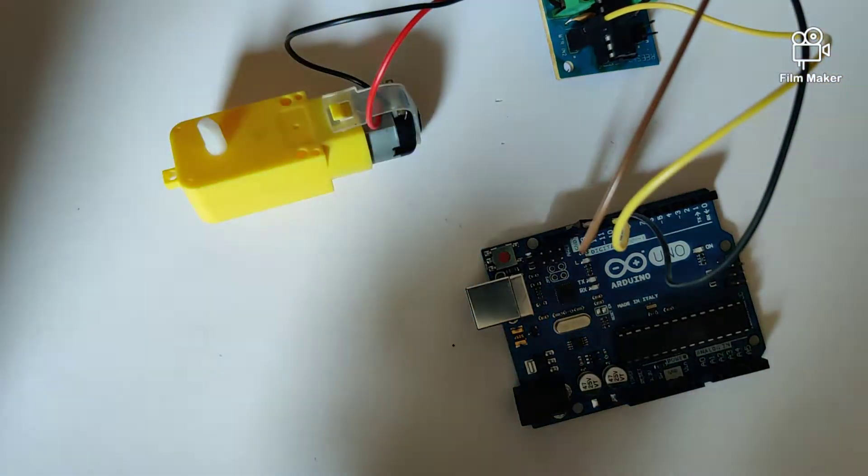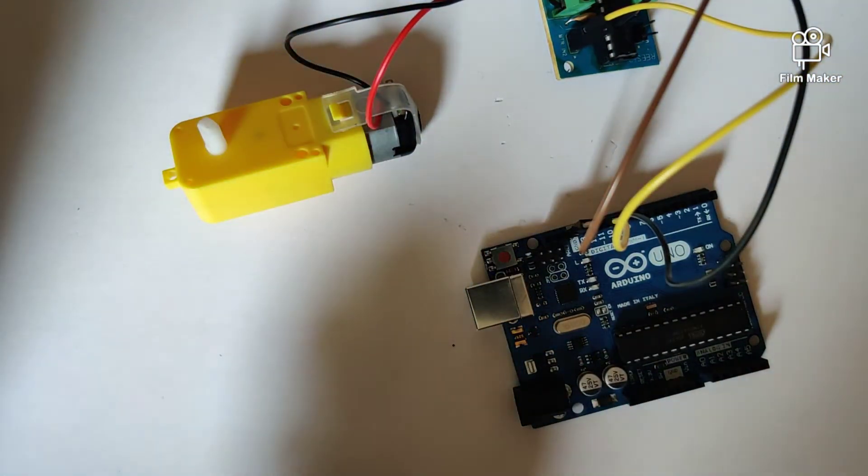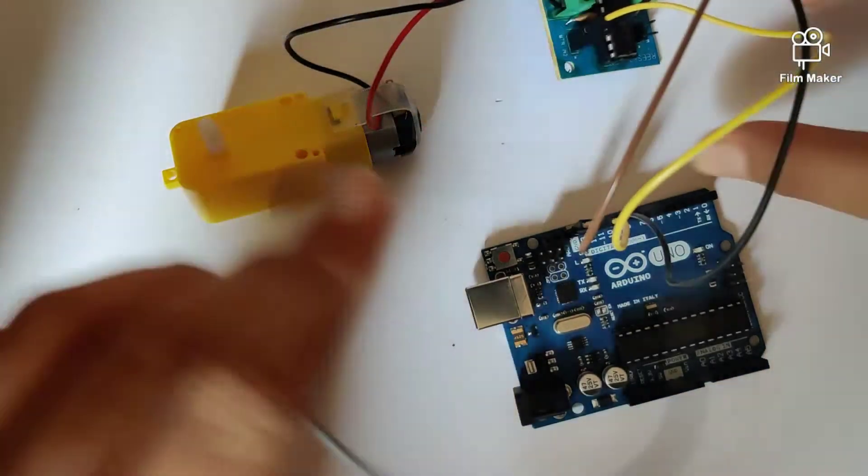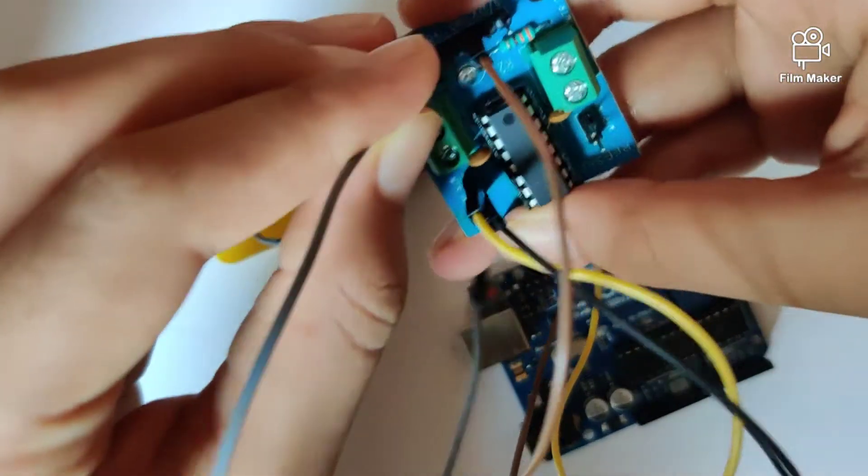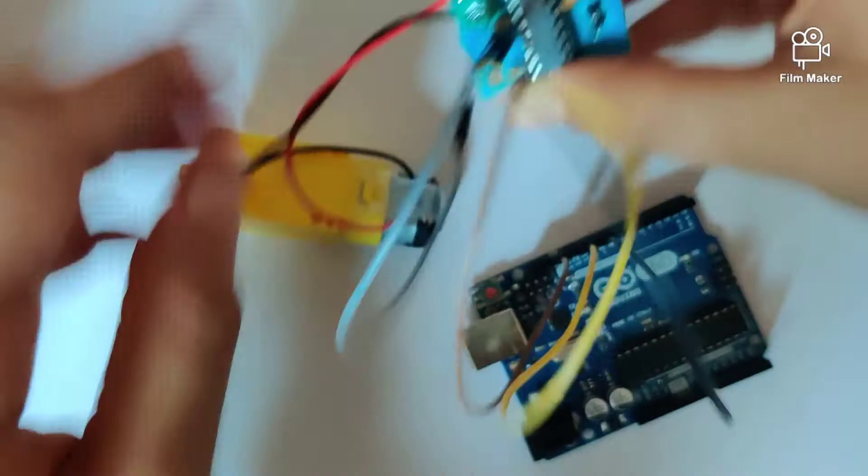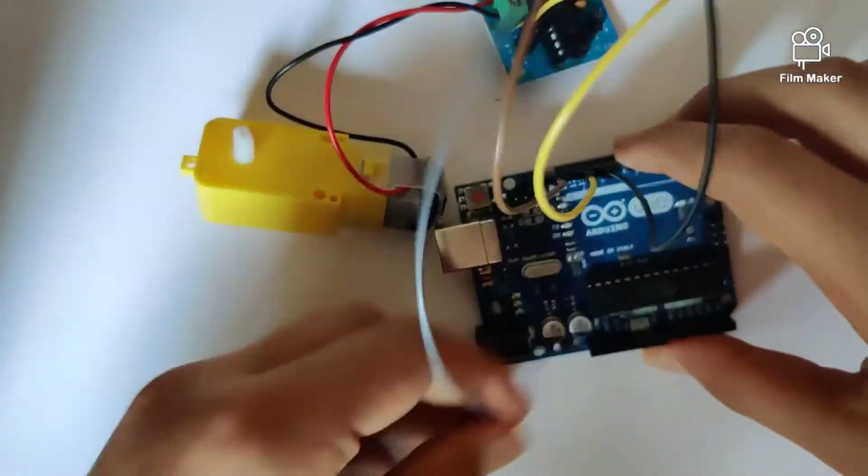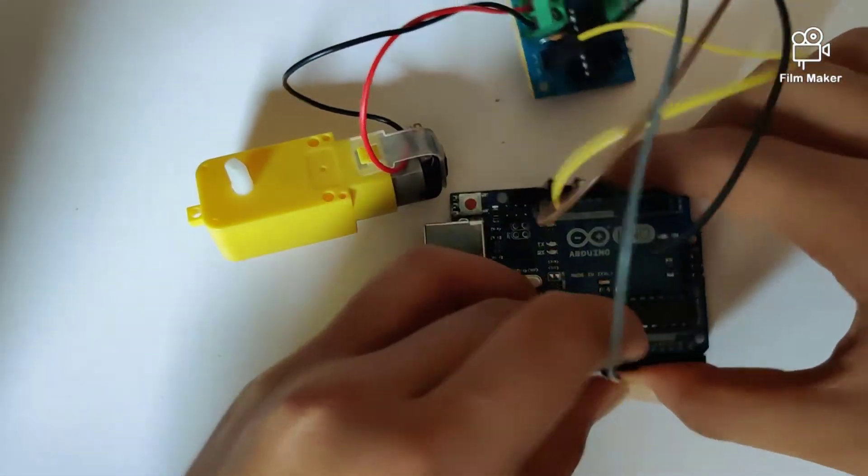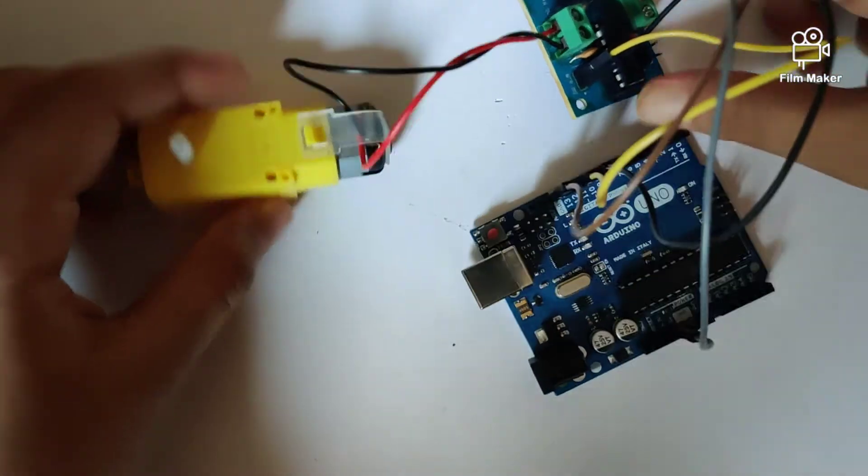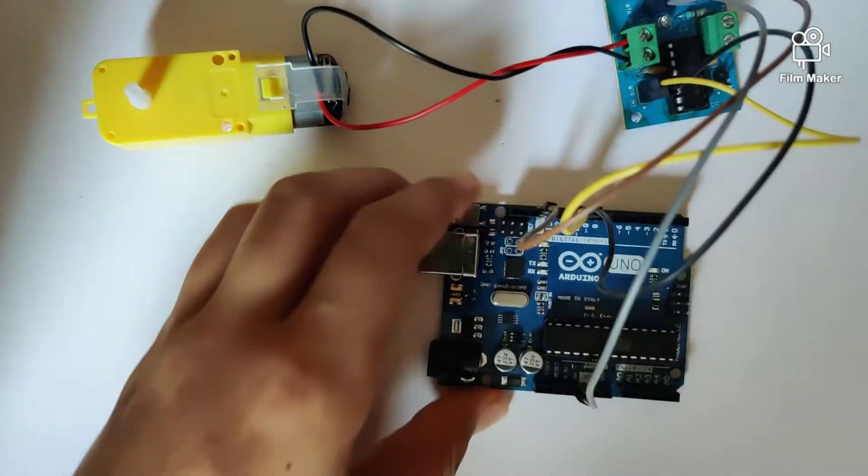And similarly, connect the 5 volts of the motor driver into the 5 volts of our Arduino Uno. So that's our circuit.